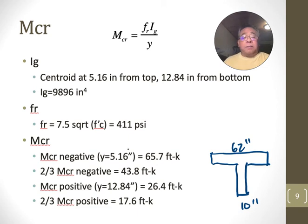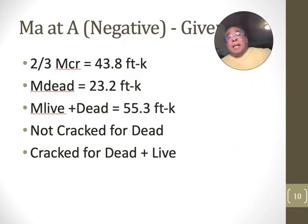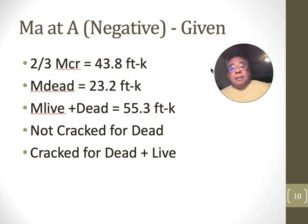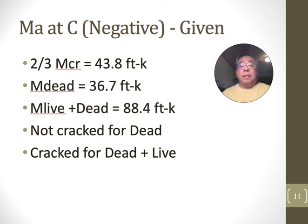Now, we need to see, is it cracked or not cracked? We need to compare. We're not going to compare it to 65.7. We're going to compare it to 43.8. That's new in 2019. At A, negative, we were given, the dead moment was 23.2, and dead plus live was 55.3. And two-thirds, we just calculated this, two-thirds of the cracking moment is 43.8. So, under dead load, it's not cracked, but under dead plus live, it is cracked. At C, the other negative moment on the other side, so it's the same cracking moment, negative cracking moment, 43.8. Dead is 36.7 on the right side, and dead plus live is 88.4. So, once again, under the dead load only, not cracked, and for dead and live, it is cracked.